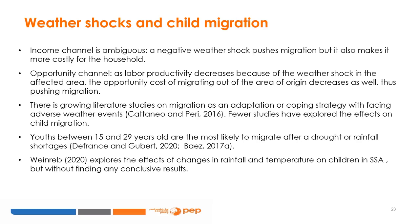There is a growing literature studying how migration is used as an adaptation or coping strategy to face adverse weather events. Some authors analyzed age-specific patterns of weather-induced migration, and just a few studies have explored the effects of climate change on child migration. It has been shown by De France and Gubert, 2020, for Mali, and Baez and co-authors, 2017, for Northern Latin America and the Caribbean, that youths between 15 and 25-29 years of age are the most likely to migrate after a drought or rainfall shortages. The effects of changes in rainfall and temperature on children have been explored by Wynereb, 2020, for Sub-Saharan Africa, without finding any conclusive result.